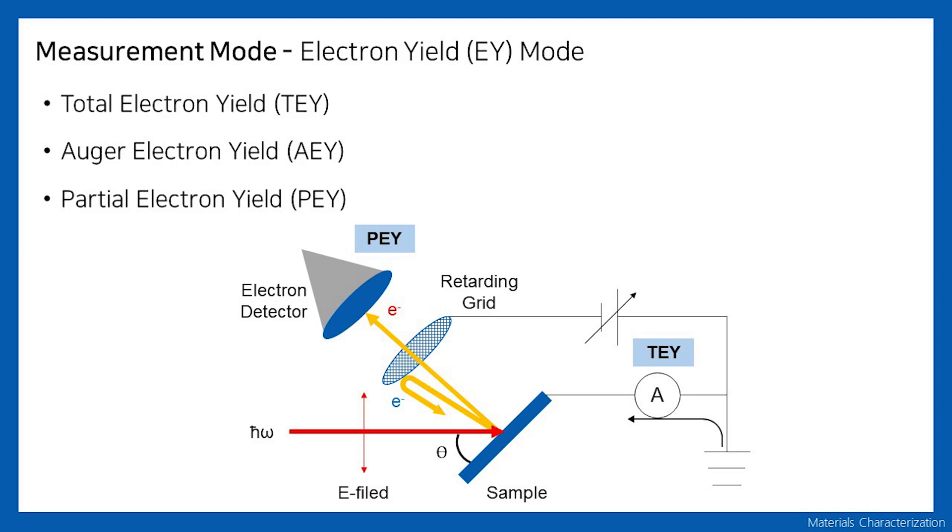The electron yield mode is divided into total electron yield, partial electron yield, and Auger electron yield. Total electron yield is a method of detecting electrons of all energy emitted from a sample. Not only Auger electrons and photoelectrons by photoemission, but also photoelectrons emitted by inelastic scattering inside the sample are detected.